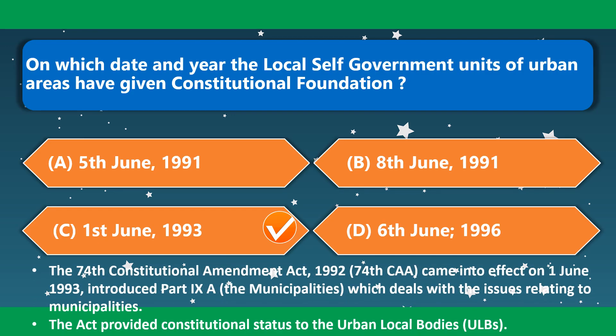On which date and year were local self-government units of urban areas given constitutional foundation? It is 1st June 1993. The 74th Constitutional Amendment Act 1992 came into effect on 1st June 1993, introducing Part 9A — the Municipalities — dealing with issues relating to municipalities and providing constitutional status to urban local bodies.